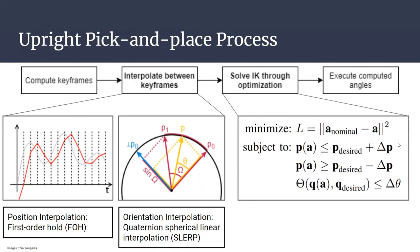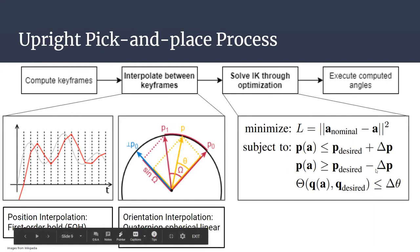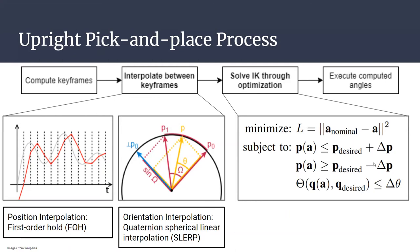From there, the joint angles needed to achieve each of the poses were computed using a non-linear optimization, where the objective function is the L2 distance of the angles to a set of constant nominal ones, and the constraints force the end effector to be relatively close to the desired poses.